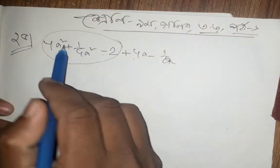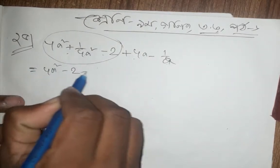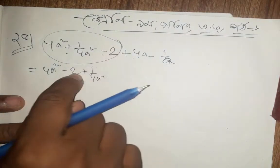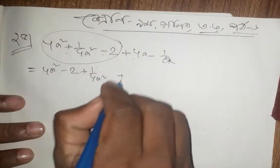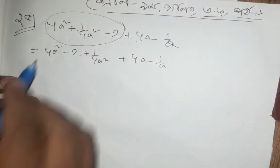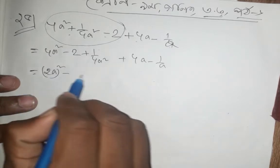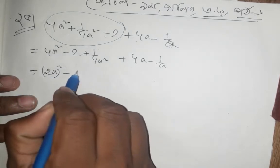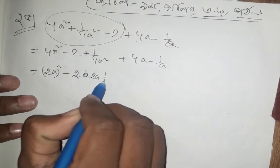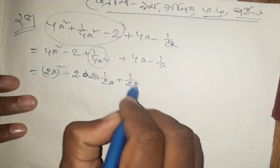How do we do this? 4a squared minus 2 plus 1 by 4a squared. We have 4 numbers and we have 4 numbers. Plus 4a minus 1 by 2a squared. Then 2a squared minus 2a into 1 by 2a, and 1 by 2a squared.